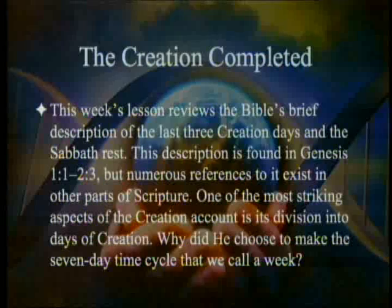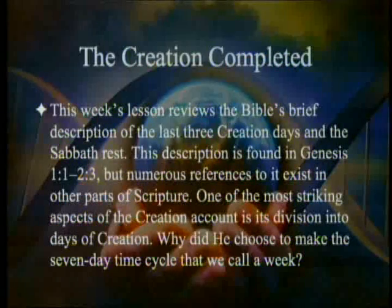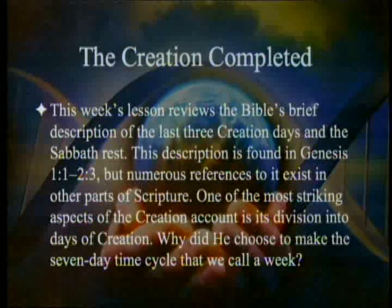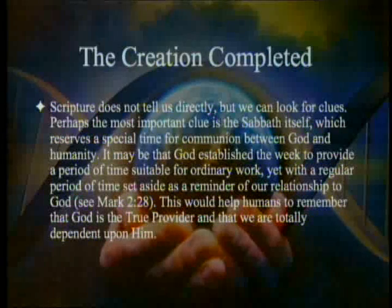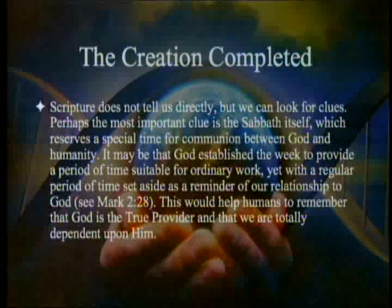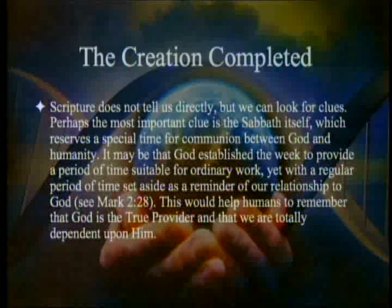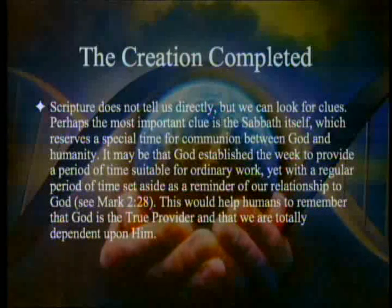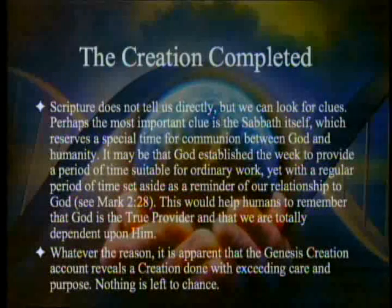This week's lesson reviews the Bible's brief description of the last three creation days and the Sabbath rest, found in Genesis 1:1–2:3, with numerous references elsewhere in Scripture. One of the most striking aspects of the creation account is its division into days. Why did God choose to make the seven-day time cycle we call a week? Perhaps the most important clue is the Sabbath itself, which reserves a special time for communion between God and humanity — a reminder of our relationship to God and our total dependence on Him. The Genesis creation account reveals a creation done with exceeding care and purpose; nothing is left to chance.